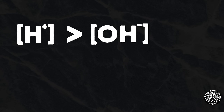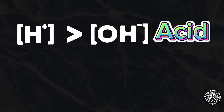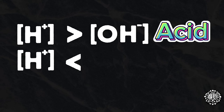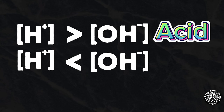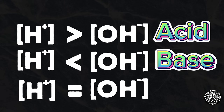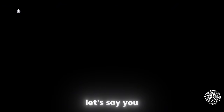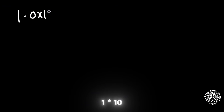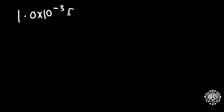When the H⁺ ion is greater than the OH⁻ ion, then this means it is an acidic solution. But when the H⁺ ion is less than the OH⁻ ion, then this means it is a basic solution. And when they are equal, it means that this is a neutral solution.